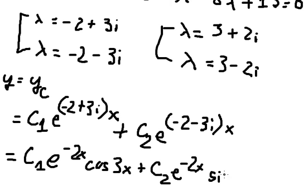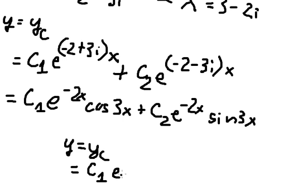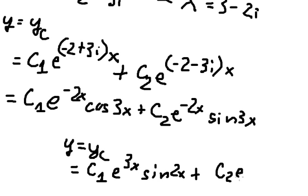So for the second one we do the same. We have e to the power of 3x sine 2x and c2 e to the power of 3x cosine 2x. This is the end — thank you for watching.